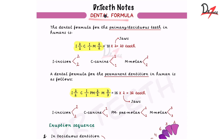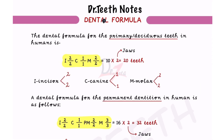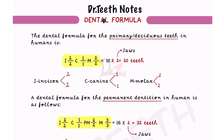Now let's talk about the dental formula. For the primary deciduous teeth in humans it is: incisors 2/2, canine 1/1, molars 2/2. That means two incisors in the maxilla and two in the mandible, one canine in each jaw, and two molars in each jaw. Total that gives 10 teeth in each jaw and 20 teeth overall.